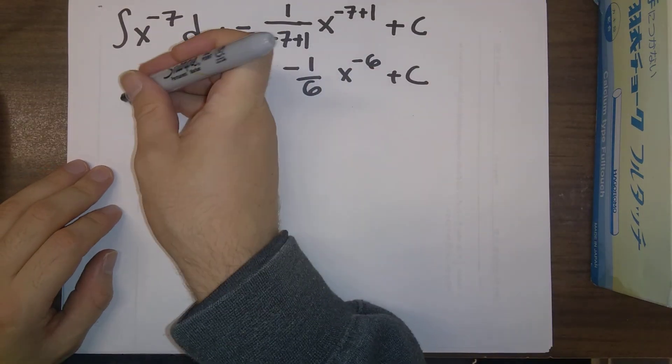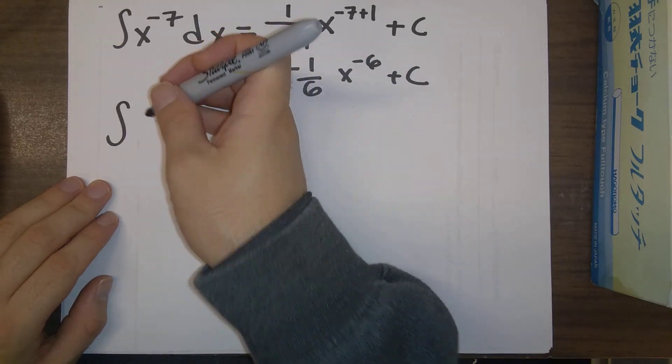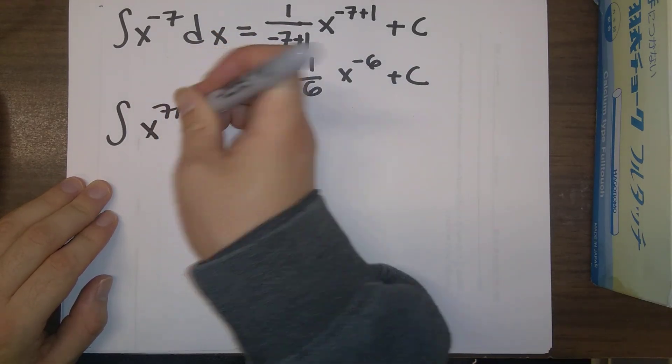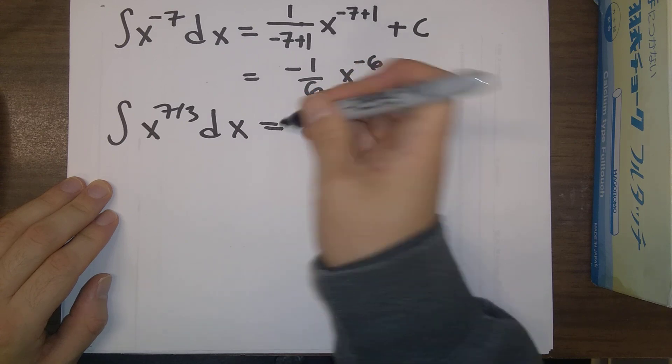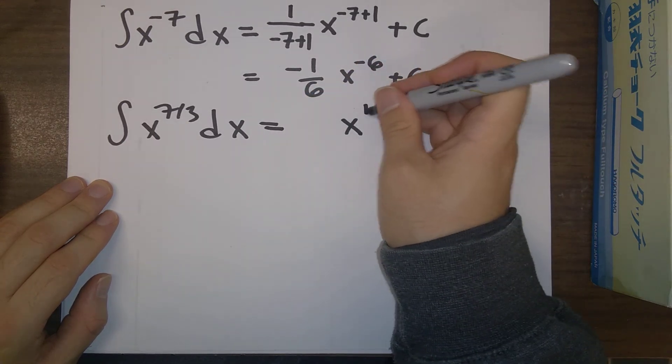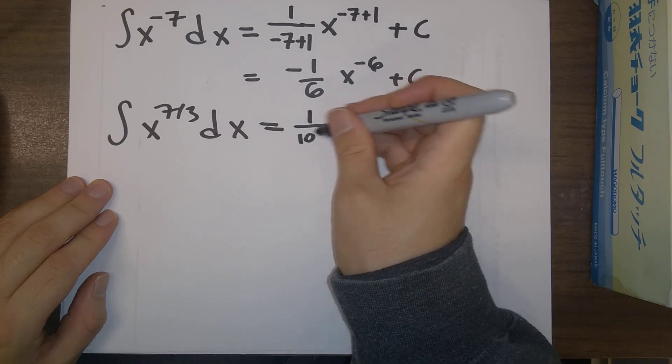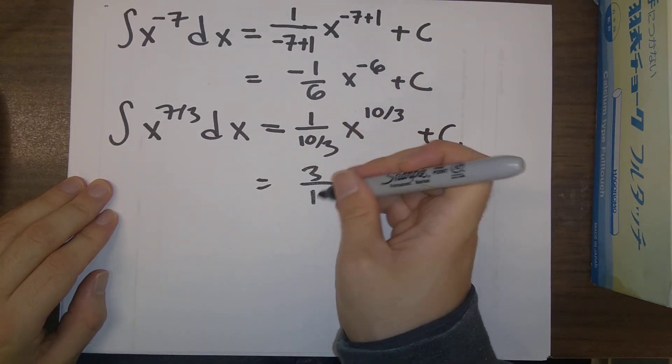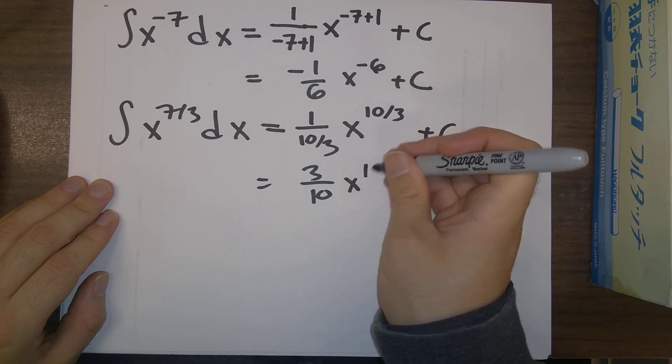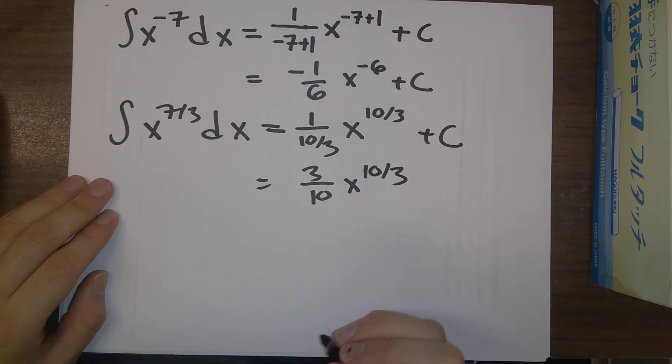One more example. This also works for fractional powers. So what's the integral of x to the 7 thirds dx? Well, add 1 on to 7 thirds, we get 10 thirds. Divide by 10 thirds, plus c. We can rearrange this, 3 tenths x to the 10 thirds.